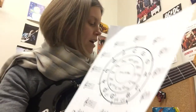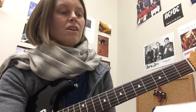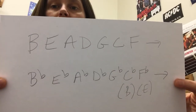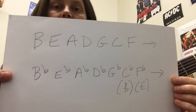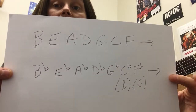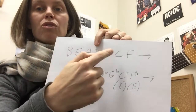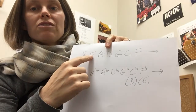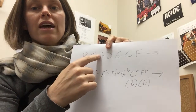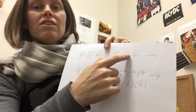Another way I was taught to remember the fourths is this little device called BEADGCF. If you can spell B-E-A-D-G-C-F, that is a good way to memorize the order of fourths. So if I start on B and I go to E, that's a fourth. E to A, A to D, D to G, G to C, C to F.